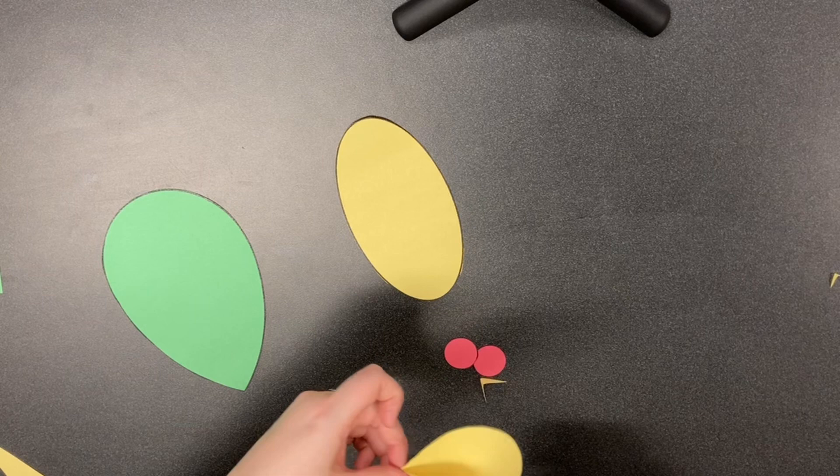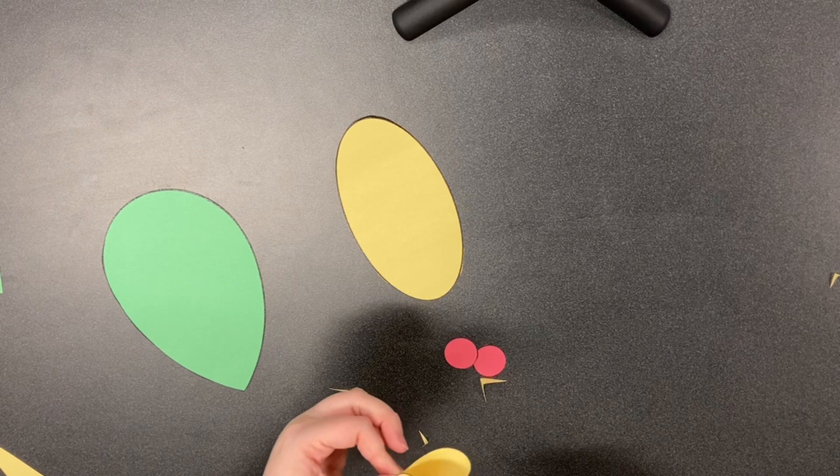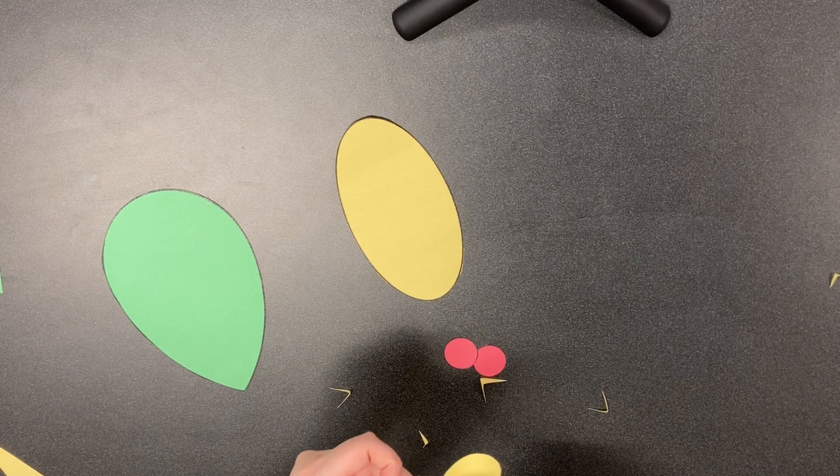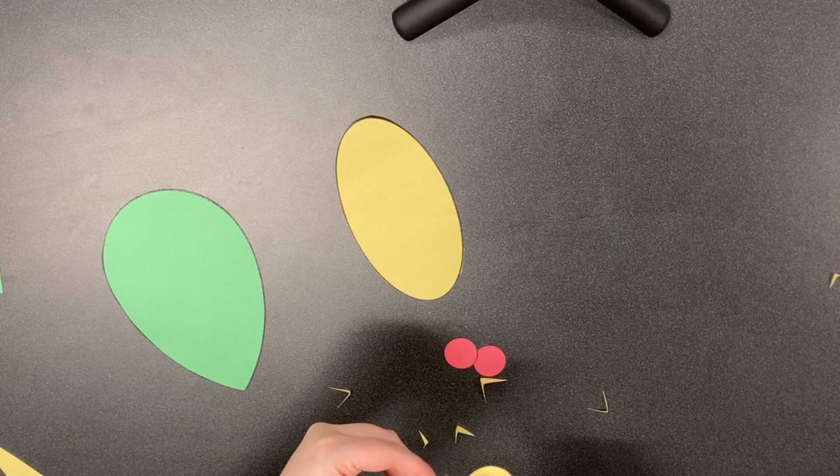If you've seen cicadas, their wings are kind of transparent like other bug wings are, and this cutting technique gives it that kind of transparent look.